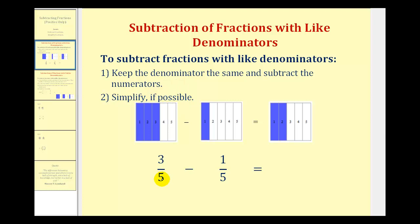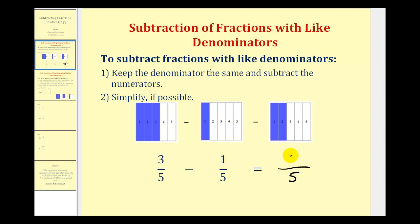So for three-fifths minus one-fifth, since both denominators are five, it's going to stay five. And now we'll subtract the numerators. Since three minus one is equal to two, this difference is two-fifths.